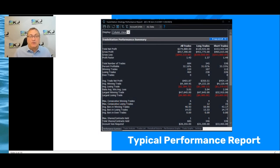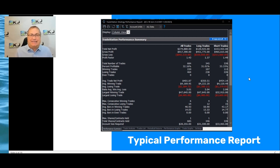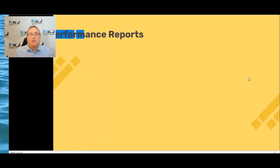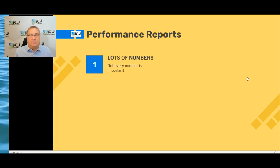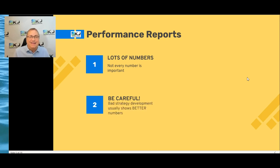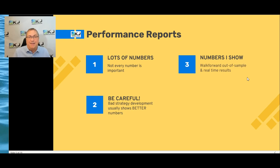Here's your typical performance report. This is in TradeStation. Other platforms have a different layout, but they still have the basic same numbers. The problem with any of these is there's just a lot of numbers. You look at it and say, a coefficient of variation? Oh my gosh, what do I have to do about that? A lot of these numbers really don't mean a whole lot, and a lot of times the better the number is, the worse the strategy works in real time. That is really hard for a lot of people to get their head around.